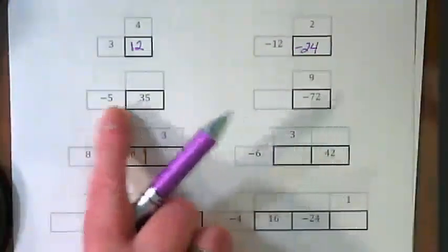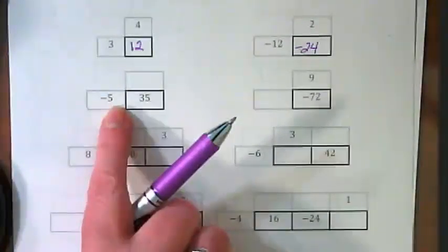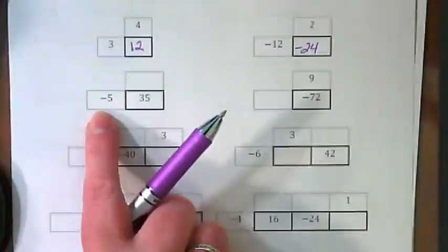We know things about 35 and 5. 35 divided by 5 is 7, but this is a positive 35 and a negative 5.